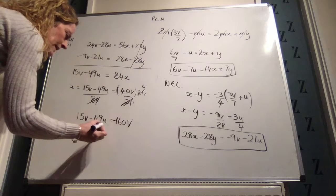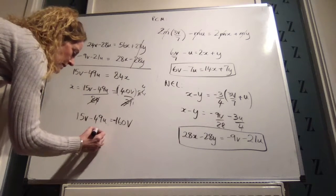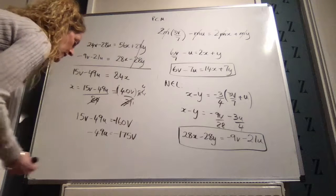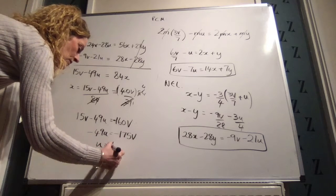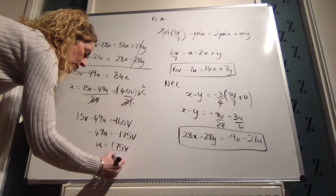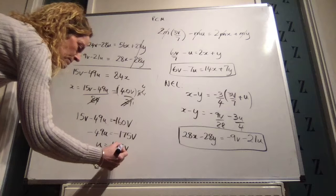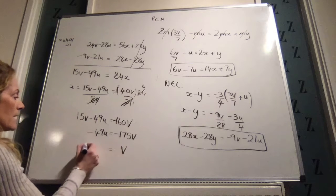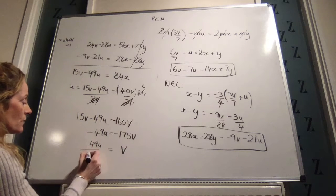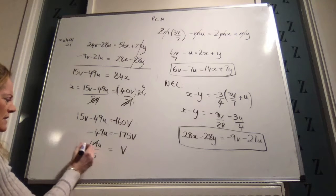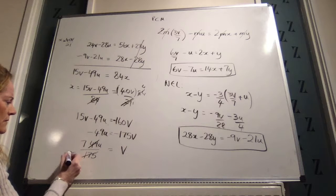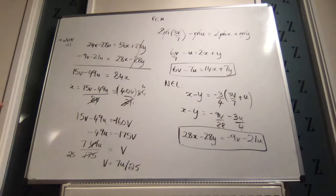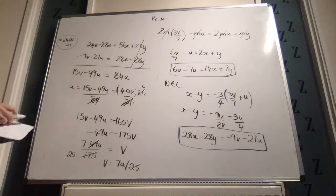If we multiply both sides by 84, we will get 15v minus 49u is equal to minus 160v. So if we bring this over, we've got minus 49u is equal to minus 175v. So u is equal to 175v over 49, or v is equal to 49u over 175. 7 into that goes 7, 7 into that goes 25. So v is equal to 7u over 25.